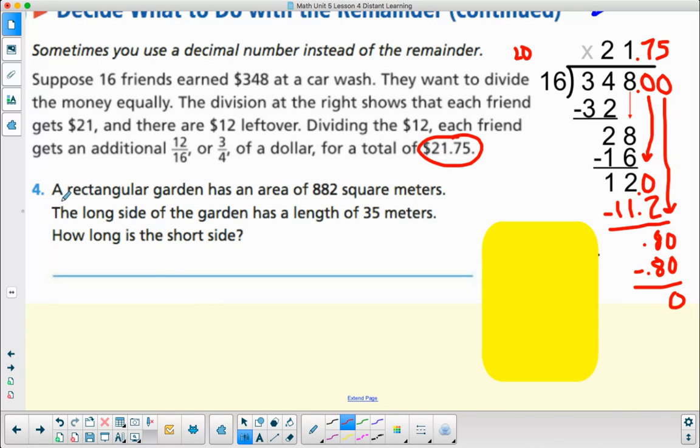Now they're going to have you try that with this one. A rectangular garden has an area of 882 square meters. Metric is usually measured in decimals. The long side of the garden has a length of 35 meters. How long is the short side? Whenever I have area, I like to draw a rectangle. It's 882 square meters inside here, and the length was 35 meters. I know that area equals length multiplied by width. So width will equal area divided by length. Go ahead and do this and make a decimal.